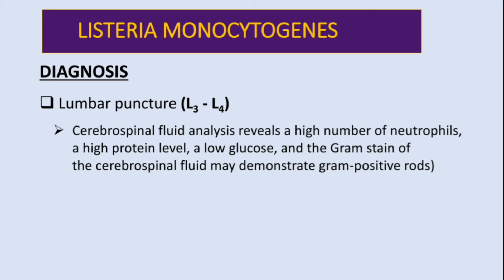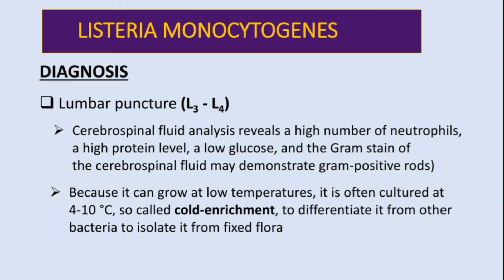A gram stain of the cerebrospinal fluid will demonstrate gram-positive rods. Because it can grow at low temperatures, it is often cultured at 4 to 10 degrees Celsius — this is commonly known as cold enrichment media — to differentiate it from other bacteria and isolate it from mixed flora. So we use gram staining and cold enrichment media culture.